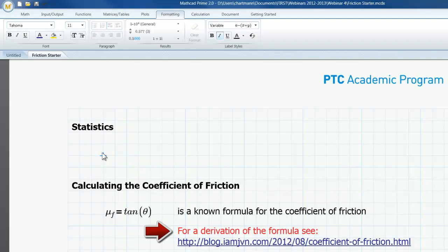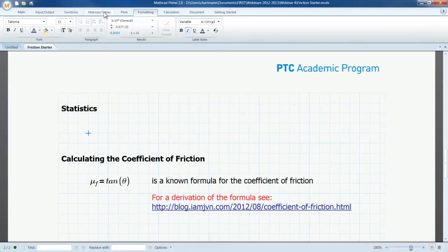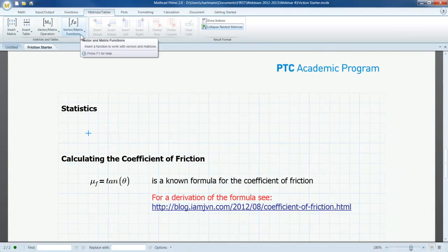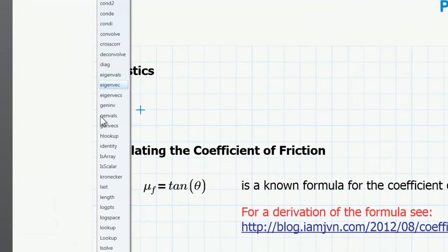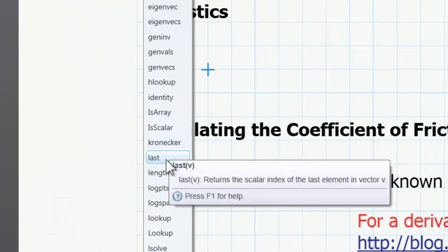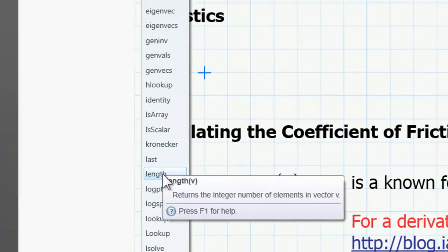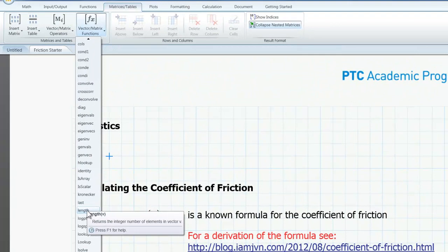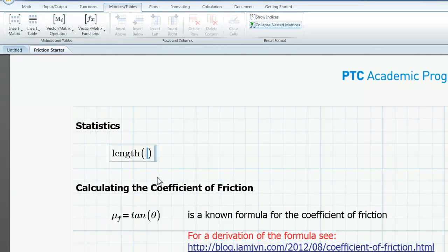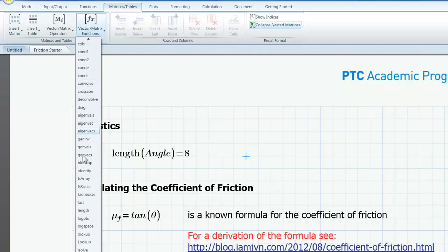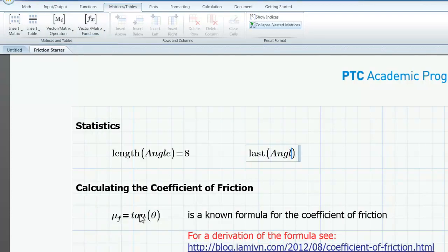There are a couple different ways I can calculate the number of trials. I'm going to use two different functions from the matrices table ribbon. When I left-click on vector matrix functions and I scroll down, there's both a last function and a length function. If I left-click on length, that's going to insert the length function and that'll return the integer number of elements in the vector. So when I click length and then type angle and then evaluate it, it'll tell me that there are eight elements in vector angle. If I use last, and I'm going to do this just to show again that Mathcad uses a zero-based matrix addressing system. When I click last of angle, that returns the value seven. It's the number on the last row.